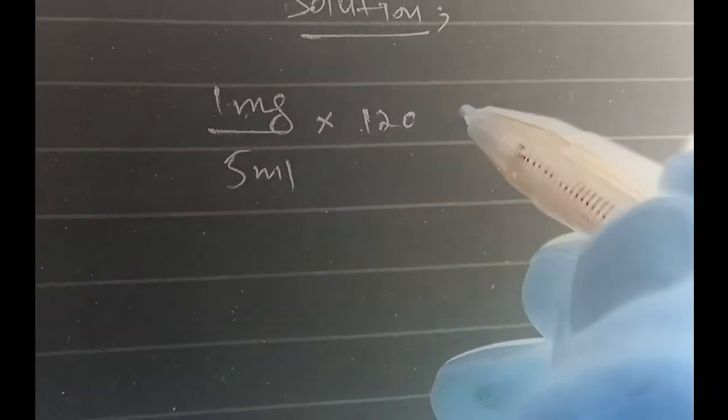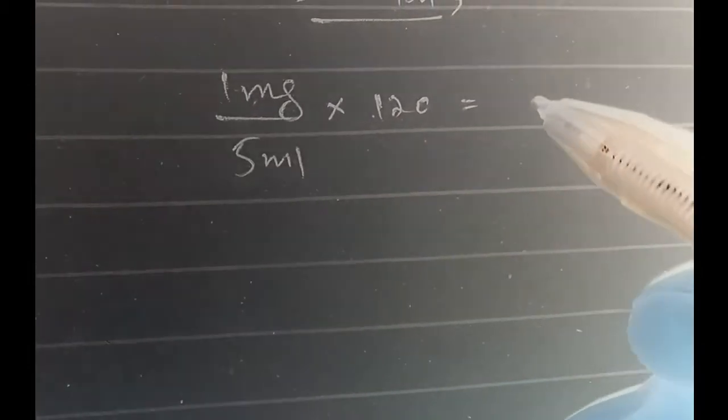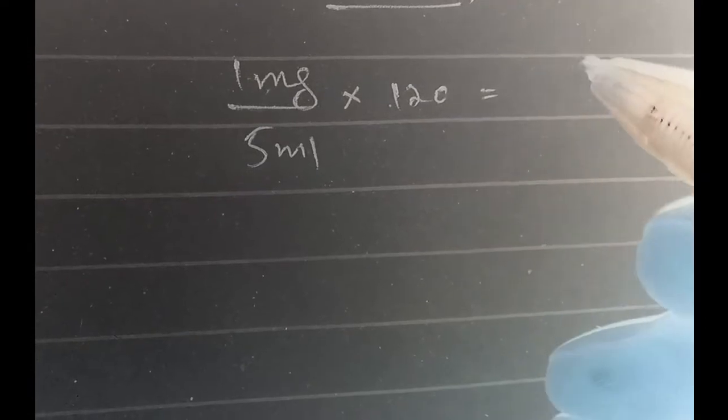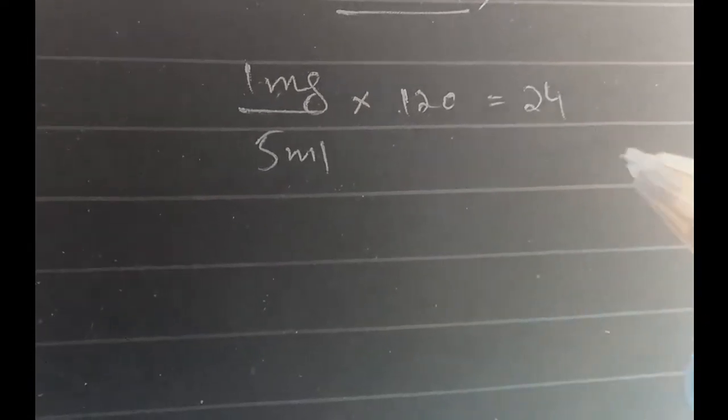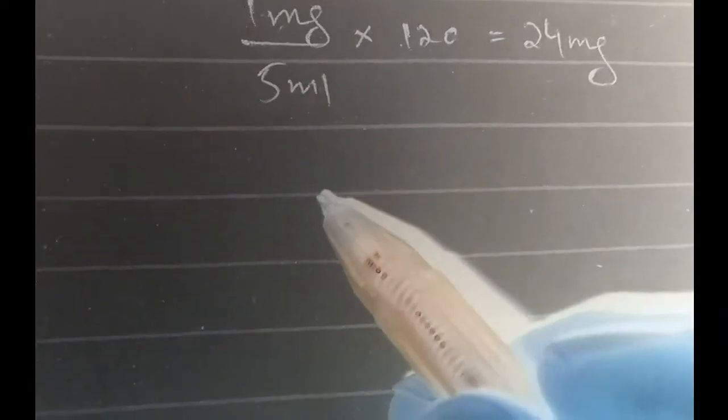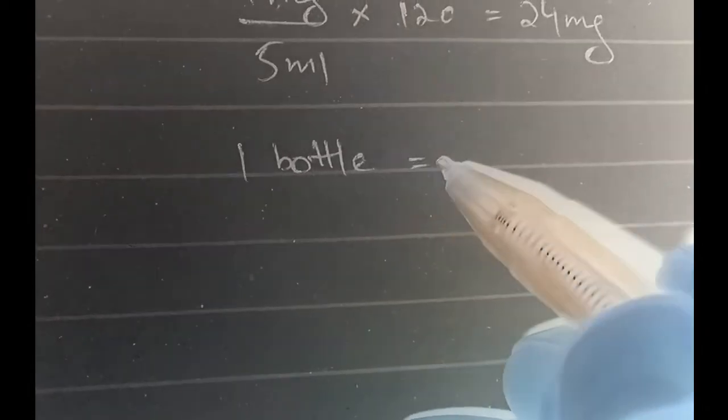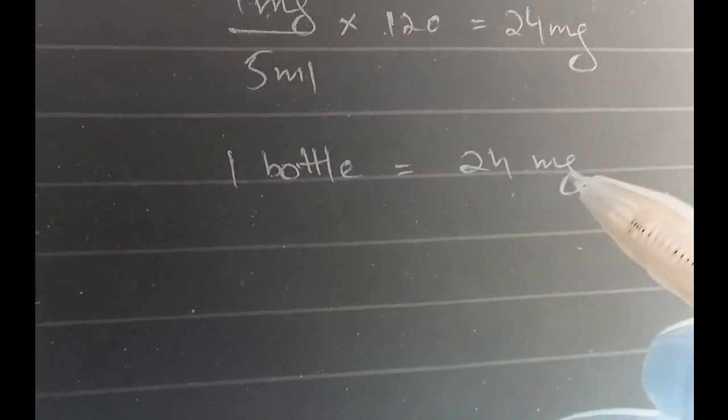So this will give us, if we do the calculation, it will give us 24. So actually 24 milligrams are there in one bottle. So we can write it like this: one bottle has 24 milligrams in it.